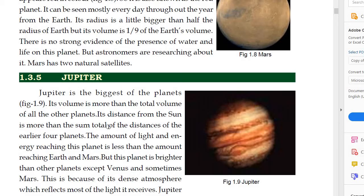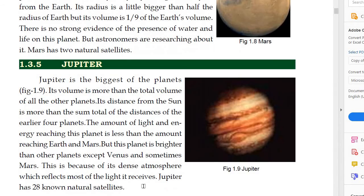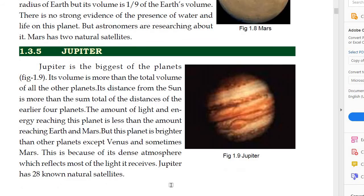Jupiter is a very bright planet — in fact, after Venus, Jupiter is the brightest planet. This is because of its dense atmosphere, which reflects most of the light it receives. Jupiter has 28 known natural satellites.